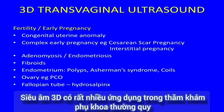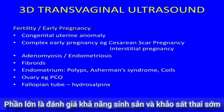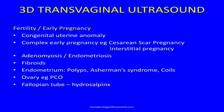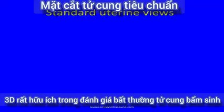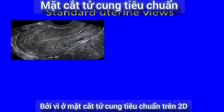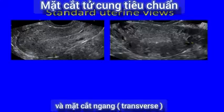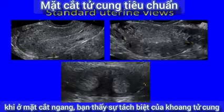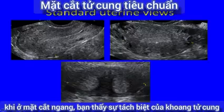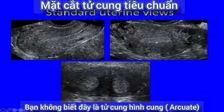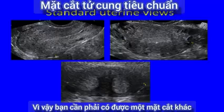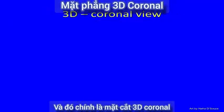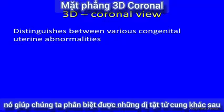3D transvaginal ultrasound has many routine applications in gynaecology, many of them in fertility and early pregnancy. 3D is very useful in the diagnosis of a uterine anomaly, because in the standard 2D uterine views you get the longitudinal plane and the transverse plane. But when in the transverse plane you see a separation of the endometrial cavity near the fundus, you don't know whether this is an arcuate, subseptate, or septate uterus. So you need to get the coronal plane, which helps to distinguish between the different abnormalities.